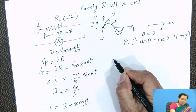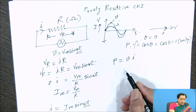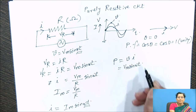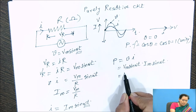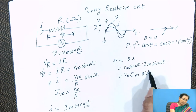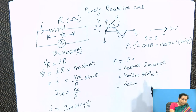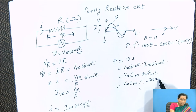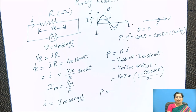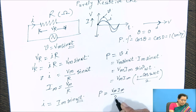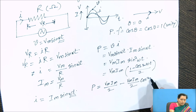Now we can calculate the instantaneous power for this circuit. Instantaneous power is given by P equal to V into I. Voltage is Vm sine omega t and current is Im sine omega t. The equation becomes P equal to Vm Im sine squared omega t. Using the identity for sine squared omega t, we get P equal to Vm Im times (1 minus cos 2 omega t) divided by 2, which gives Vm Im by 2 minus Vm Im by 2 times cos 2 omega t.